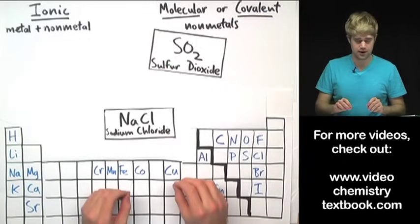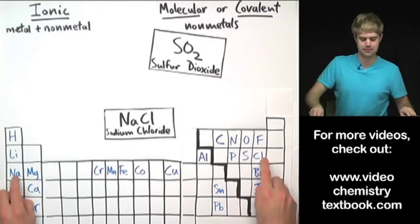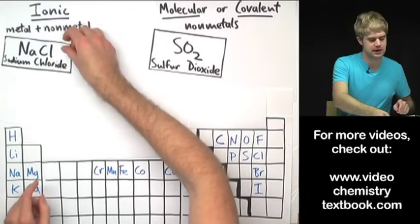Sodium chloride is made of sodium, a metal, and chlorine or chloride which is a non-metal. So sodium chloride is an ionic compound.